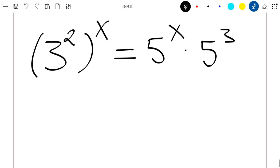So what is this? This is again 9 to the power x equal to 5 to the power x times 5 to the power 3.